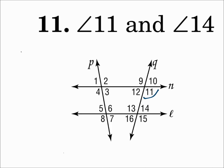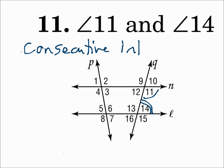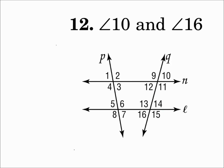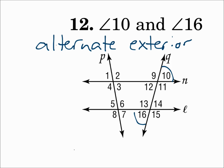Number 11: angle 11 and angle 14 — those are on transversal Q, in between the two lines on the same side of the transversal. That's consecutive interior angles. Number 12: angle 10 and angle 16 — those are on transversal Q, outside the two lines on opposite corners. That's alternate exterior angles.